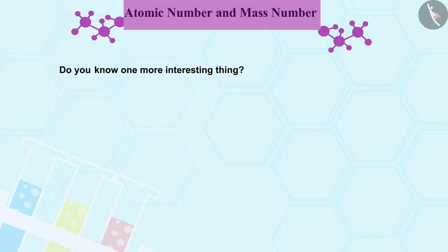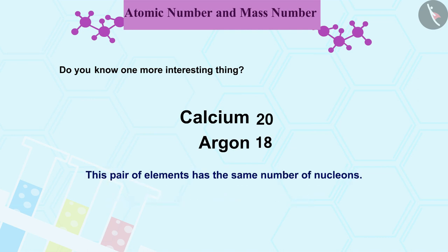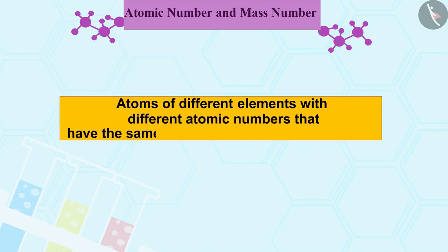Let us consider two elements, calcium, atomic number 20 and argon, atomic number 18. The number of protons in these two atoms is different, but the mass number of both elements is 40. In other words, this pair of elements has the same number of nucleons. Atoms of different elements with different atomic numbers that have the same mass number are called isobars.